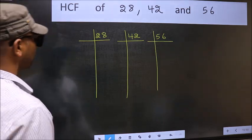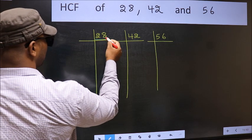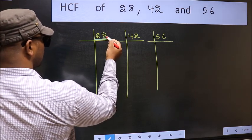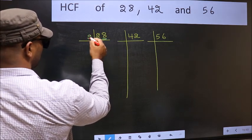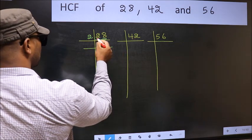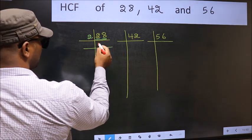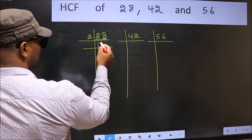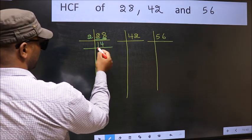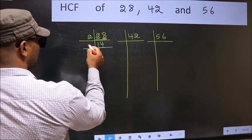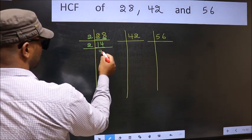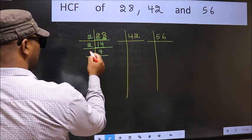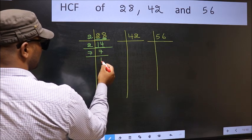Next. Now, here we have 28. Last digit 8, even, so take 2. First number 2, when do we get 2 in the 2 table? 2 times 1 is 2. The other number 8, when do we get 8 in the 2 table? 2 times 4 is 8. Now, 14 is 2 times 7 is 14. Now, 7 is a prime number, so 7 times 1 is 7.